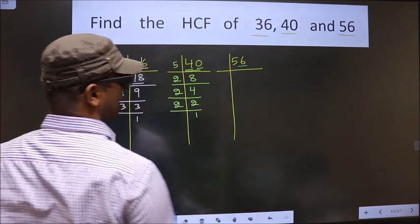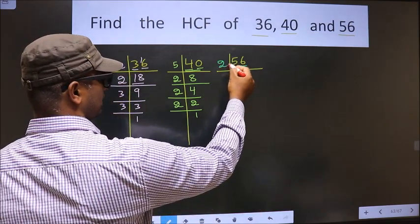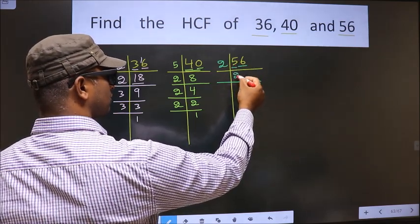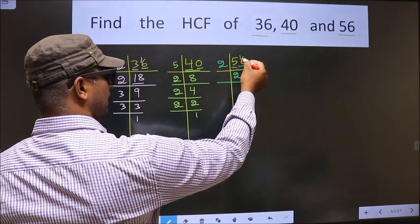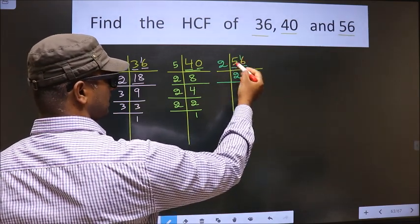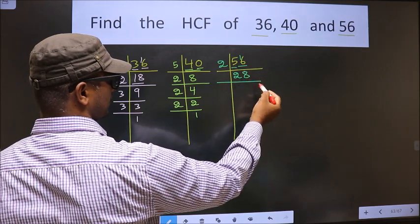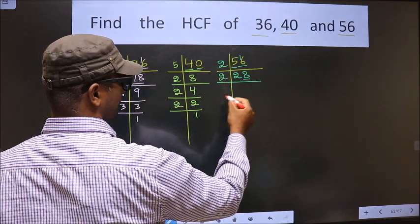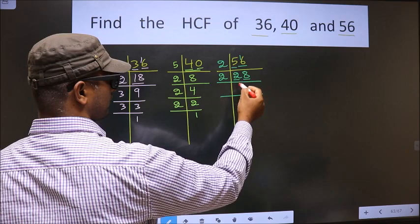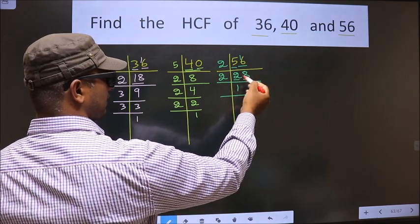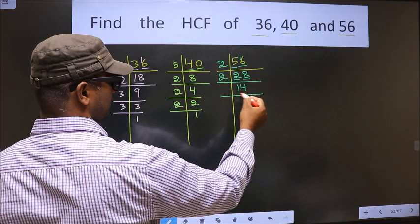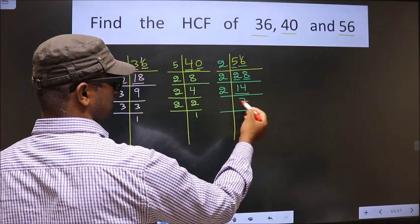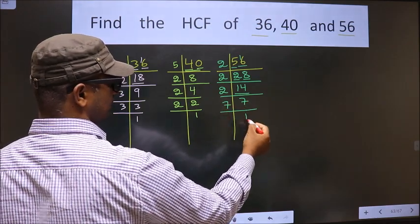For 56, the last digit is 6 — even — so we take 2 here. The first number is 5; a number close to 5 in the 2-table is 2×2=4. 5 minus 4 is 1, carried forward making it 16. 16 in the 2-table is 2×8=16. Now the last digit is 8 — even — so we take 2. The first number is 2; 2×1=2 in the 2-table. Next number is 8; 2×4=8 in the 2-table. Now we have 14; 14 is 2 sevens. 7 is a prime number, so we take 7: 7×1=7.